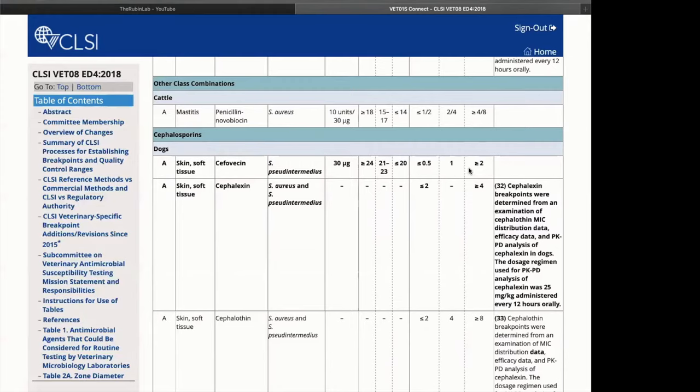Similarly, just to the right, we have our MIC interpretive criteria, where an MIC of less than or equal to 0.5 would be considered susceptible, one intermediate, and greater than or equal to two resistant.